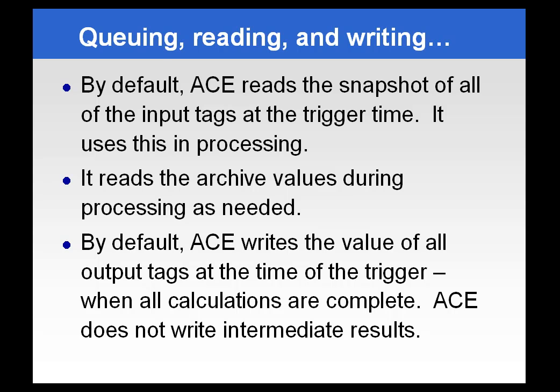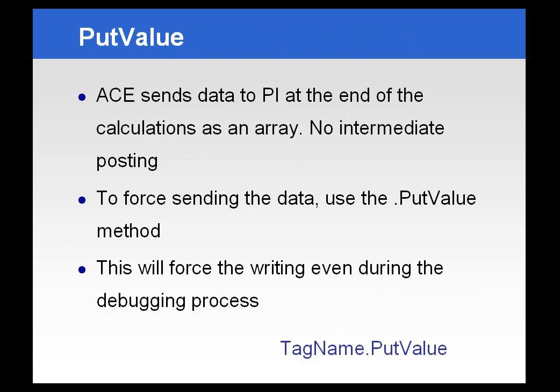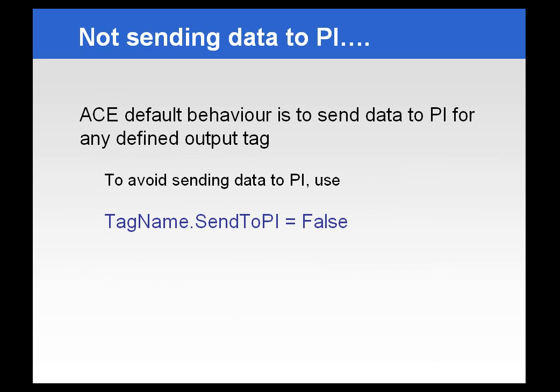ACE does not write any intermediate results that it calculates. If you do want to write interim results for calculations that have a lot of iterations, you can use the tag name put value function. This will force writing a value during any iteration of the calculation. Note that a side effect of using this function is that it will force writing values even during testing and debugging.